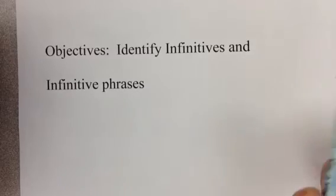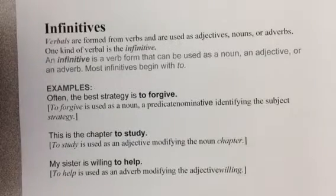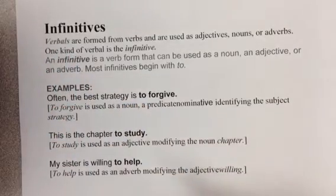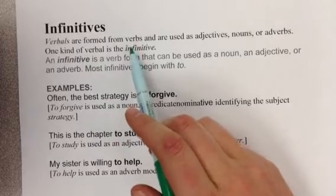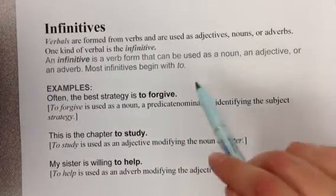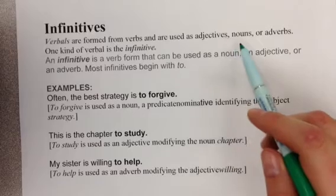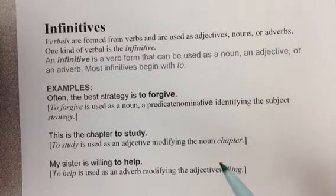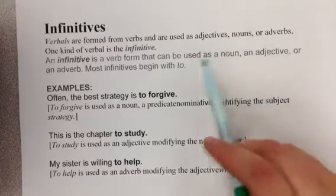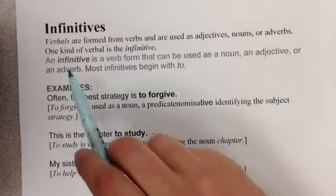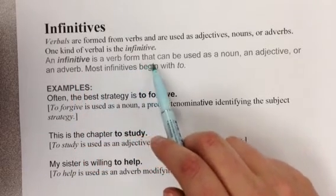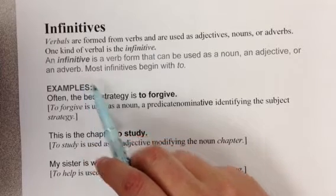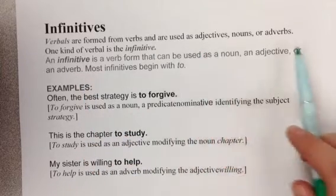This is probably one of the easiest phrases to identify. An infinitive is a type of verbal. A verbal occurs when you take a verb, you change it somehow, and then you use it as either an adjective, a noun, or an adverb. An infinitive is the easiest one to find, but sometimes it's hard to classify as one of these parts of speech because an infinitive is a verb form that can be used as a noun, an adjective, or an adverb. So it can be used as all of these functions.